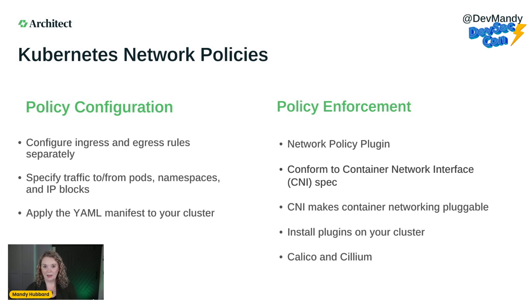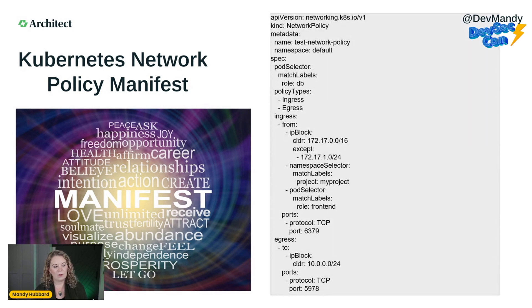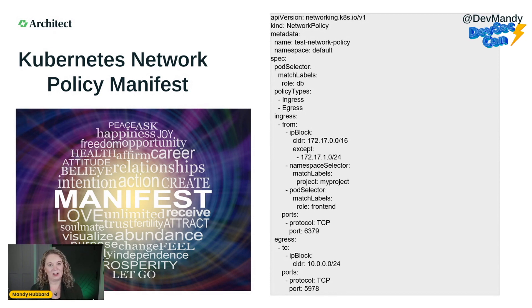Now let's look at a simple Kubernetes network policy manifest. The first manifest is used to deny all ingress traffic to all pods — simple YAML that probably looks familiar. The second is more involved, with both ingress and egress rules, specifying an IP block and using protocols and ports for a granular approach to network security. That's the meat of a Kubernetes network policy right there in that file.